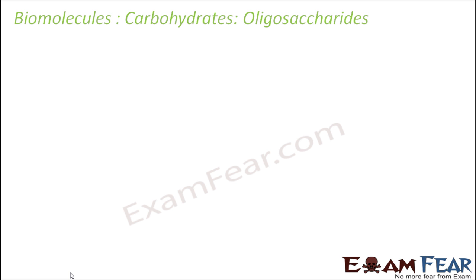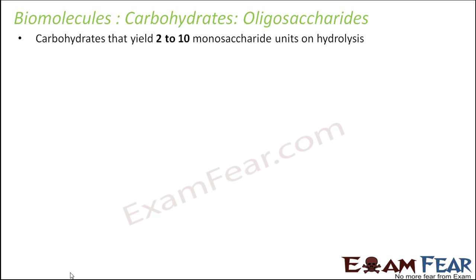So with this, I think we can now go ahead with oligosaccharides. I gave you a brief discussion on monosaccharides — they are the simplest sugar. Now the next is oligosaccharides. These are carbohydrates that yield 2 to 10 monosaccharide units on hydrolysis. That is why the term 'oligo' means few, and that few refers to 2 to 10 here.